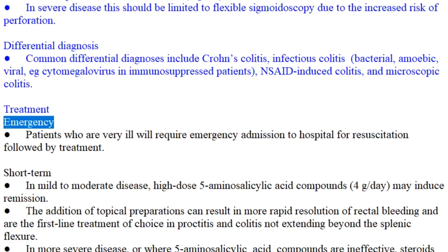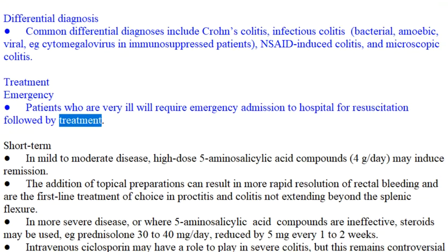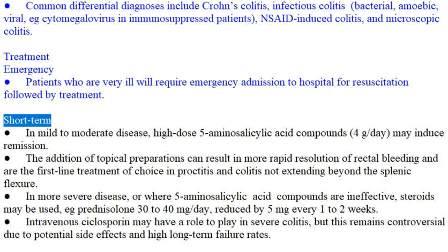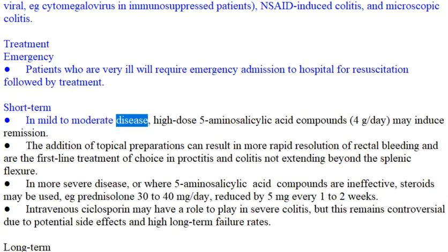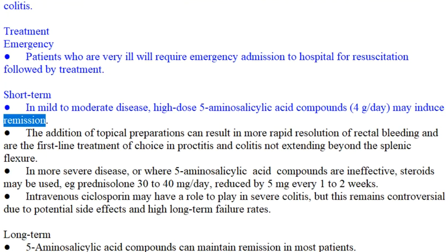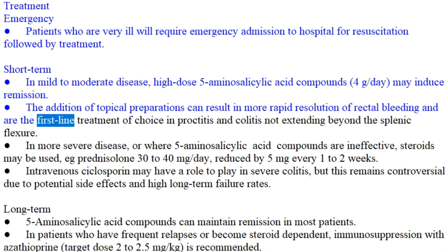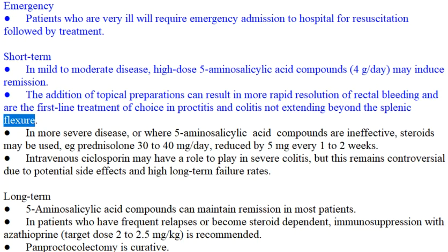Treatment — Emergency: Patients who are very ill will require emergency admission to hospital for resuscitation followed by treatment. Short term: In mild to moderate disease, high-dose 5-aminosalicylic acid compounds (4 g/day) may induce remission. The addition of topical preparations can result in more rapid resolution of rectal bleeding and are the first-line treatment of choice in proctitis and colitis not extending beyond the splenic flexure.